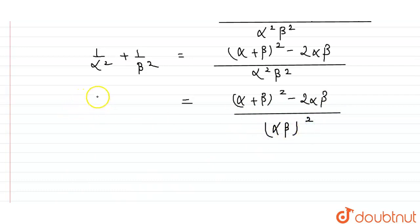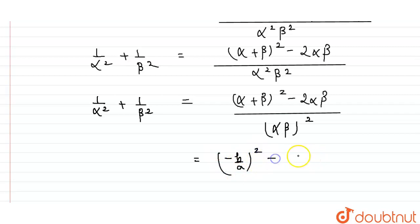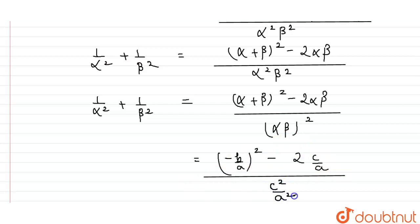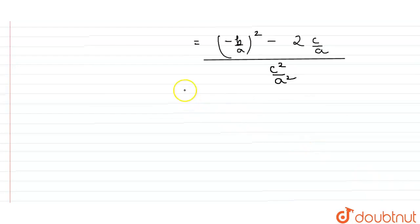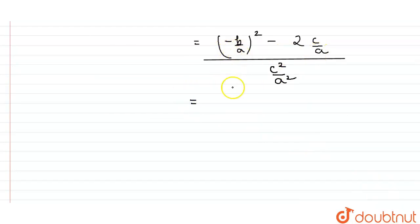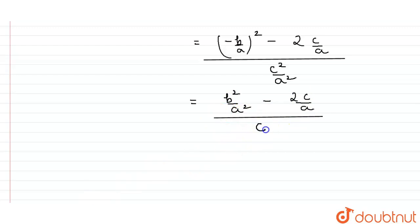Now we can replace the value of α + β and the product αβ. So, α + β is -b/a, giving (-b/a)² minus 2(c/a), all upon (c/a)². Taking the LCM, this becomes b²/a² - 2c/a, all upon c²/a².